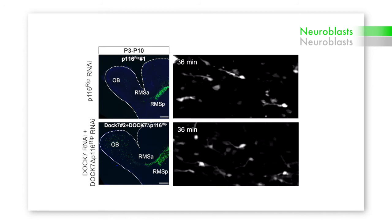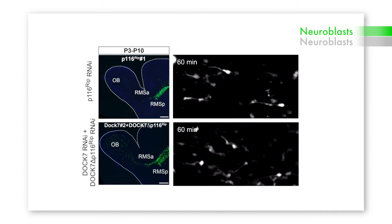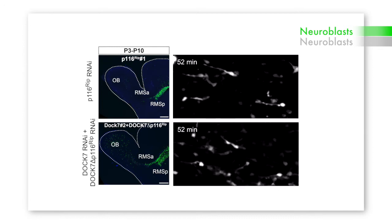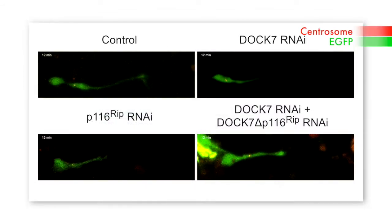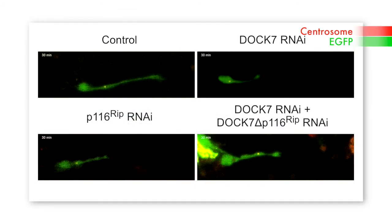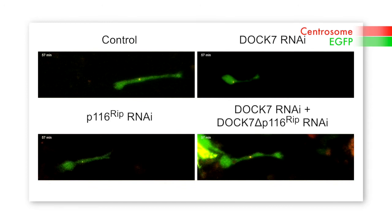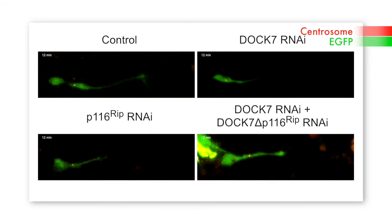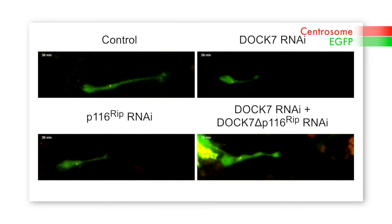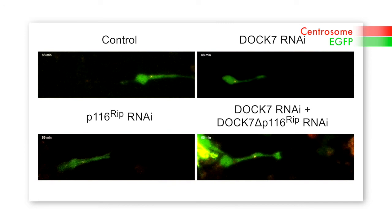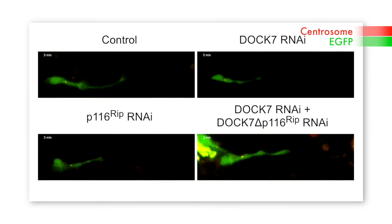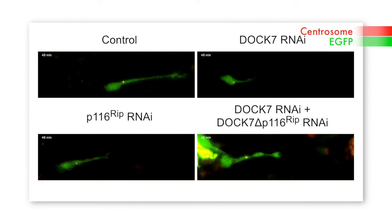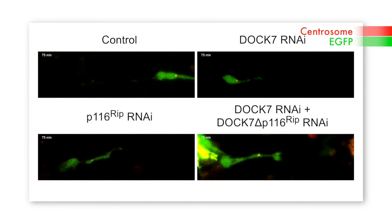DOCK7 therefore drives the tangential migration of adult neuroblasts along the rostral migratory stream by controlling both leading process extension and soma translocation. It does so by acting on two different cytoskeletal elements: for the extension and stabilization of the leading process, it acts on the microtubule network, whereas for the forward movement of the cell soma, it controls actin dynamics at the rear of the cell, generating a cup-like structure that helps push the soma forward to coordinate this tightly coupled movement.